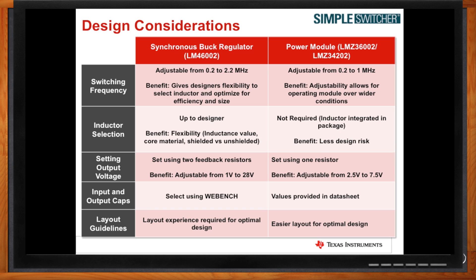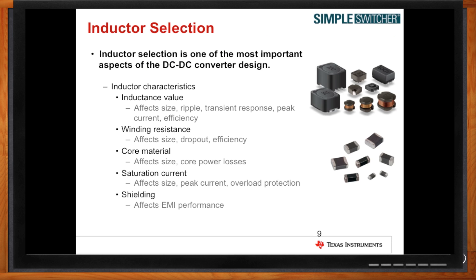What kind of things do I need to consider for inductor selection? In order to select your inductor, you need to know the inductance value, calculate the winding resistance, know the types of core material, understand the saturation current, and decide between a shielded versus unshielded inductor. The benefit of selecting the inductor is more flexibility. However, if you want a more integrated solution, a module is the way to go. If you need flexibility, cost savings from an unshielded inductor, or a wider operating range, then consider a regulator.